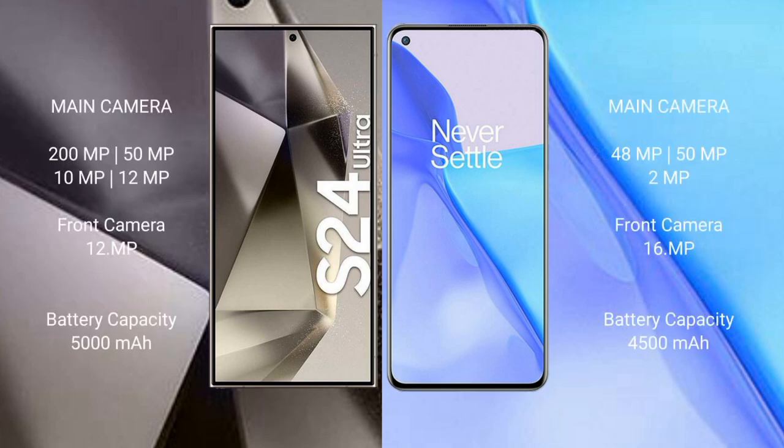Samsung Galaxy S24 Ultra features a quad rear camera setup: 200MP + 15MP + 15MP + 12MP, and a 12MP front camera. OnePlus 9 features a triple rear camera setup: 48MP + 15MP + 2MP, and a 16MP front camera.